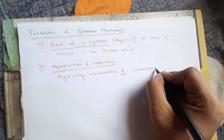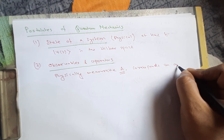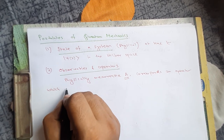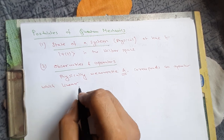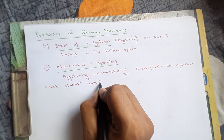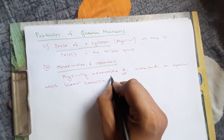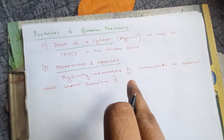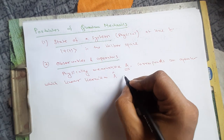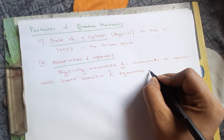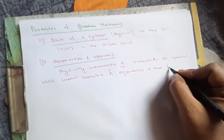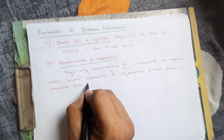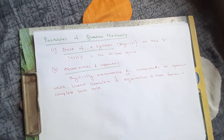The second postulate: for any physically measurable quantity A, there corresponds an operator which is linear and Hermitian, and which can be represented as Â. The eigenvectors of these operators form a complete basis state. This is the second postulate.